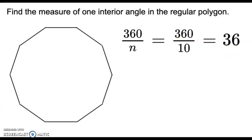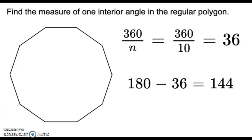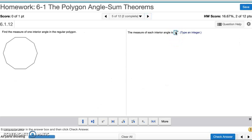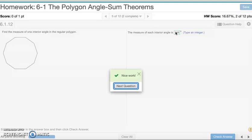Then to find one interior angle: since the exterior angle and interior angle are a linear pair and are supplementary, we subtract 36 from 180 to get 144, which is the measure of the one interior angle. So we type in 144. That's the answer for number five.